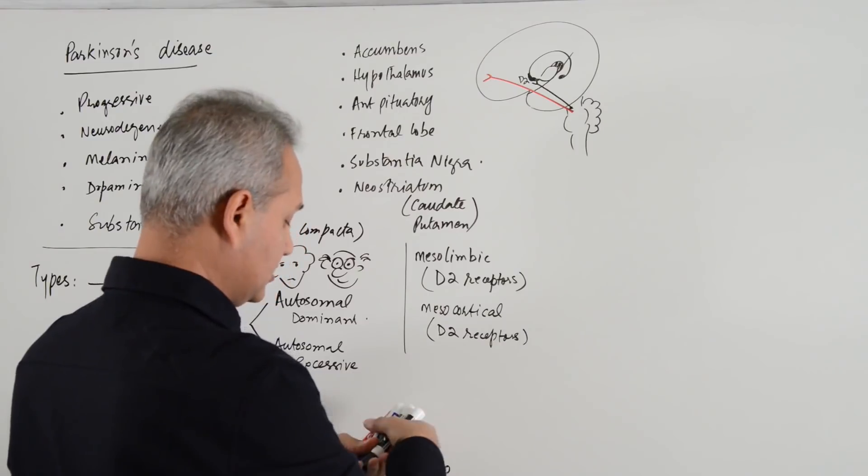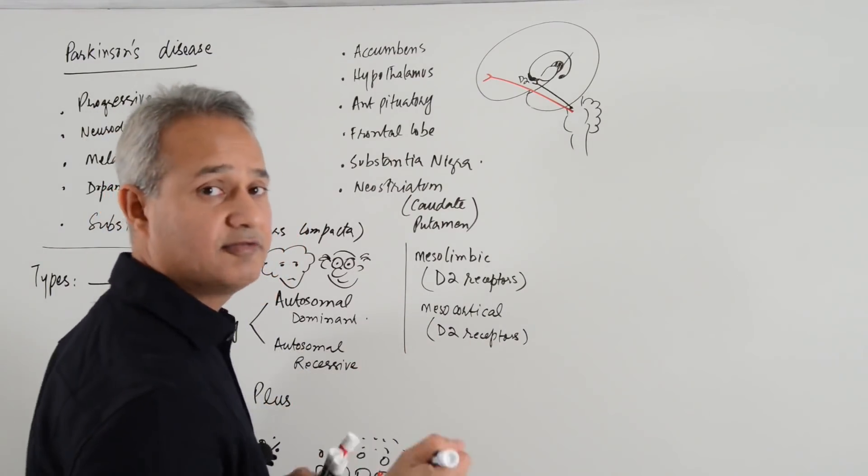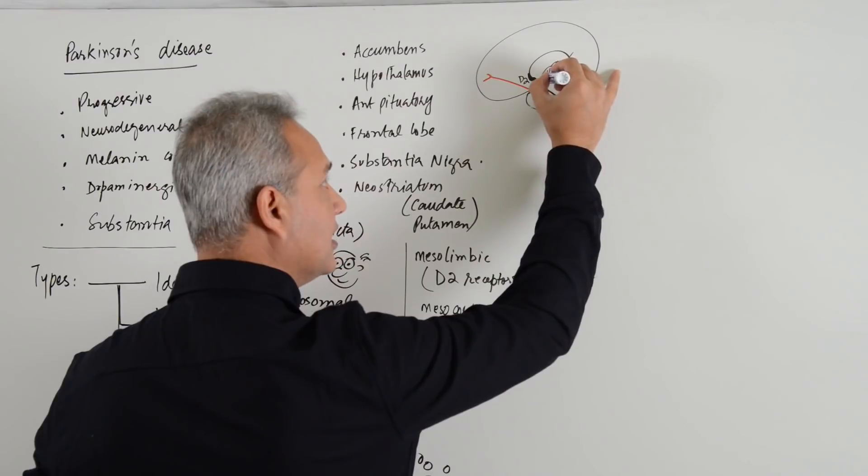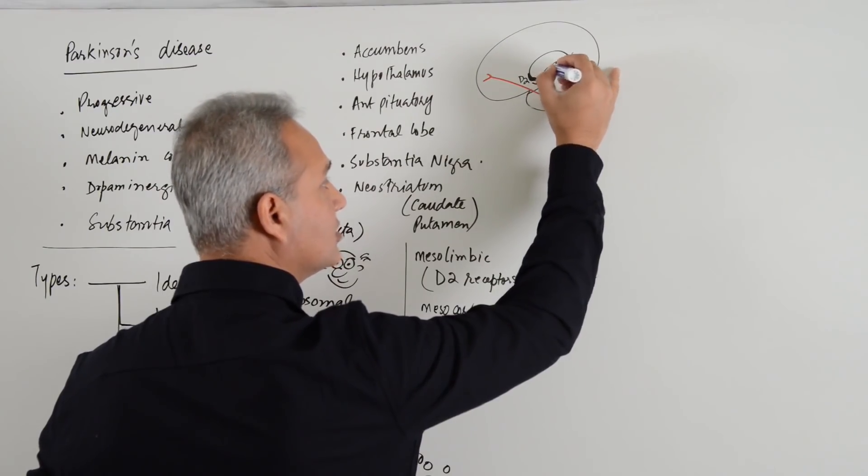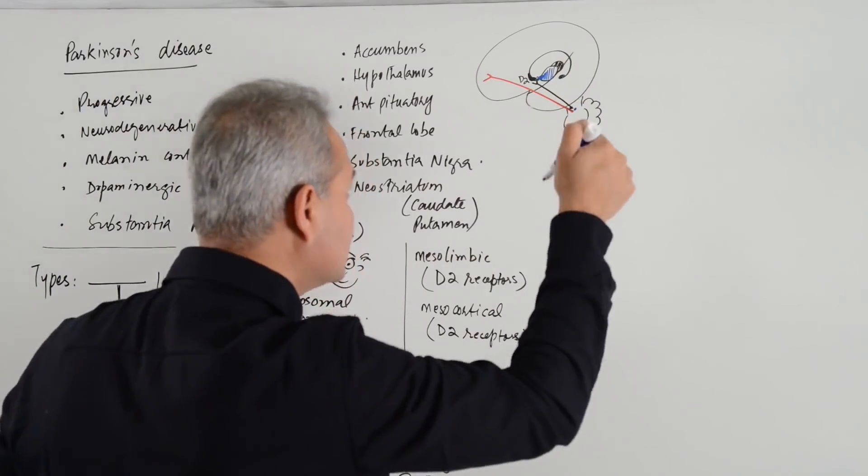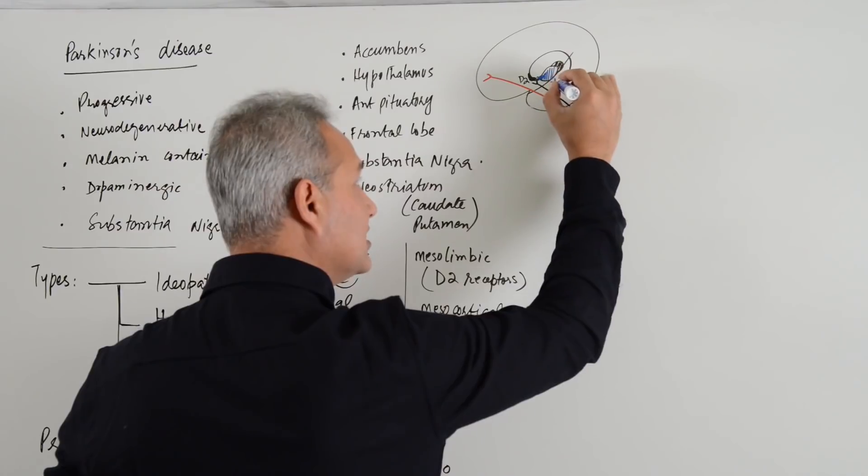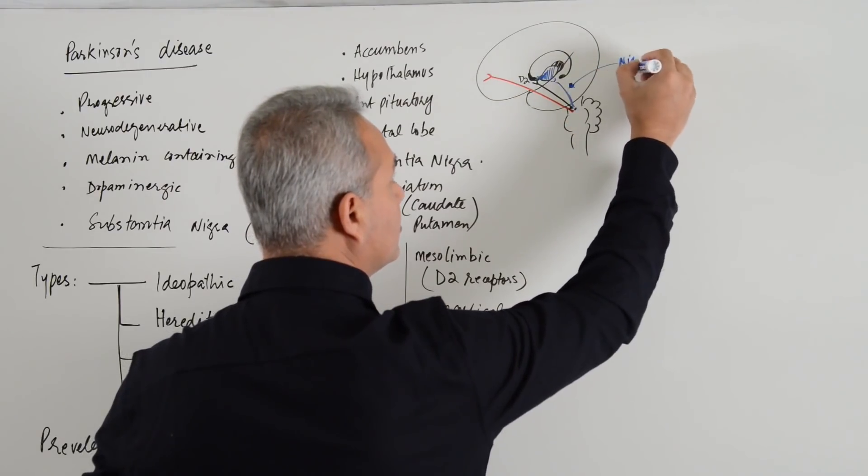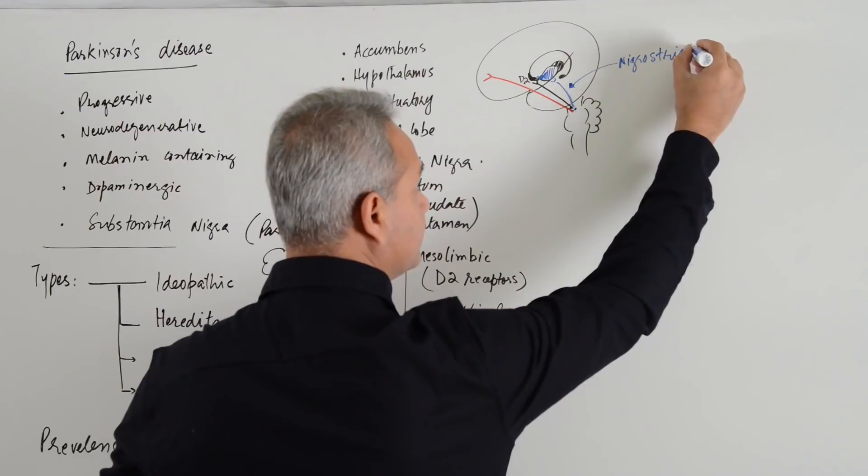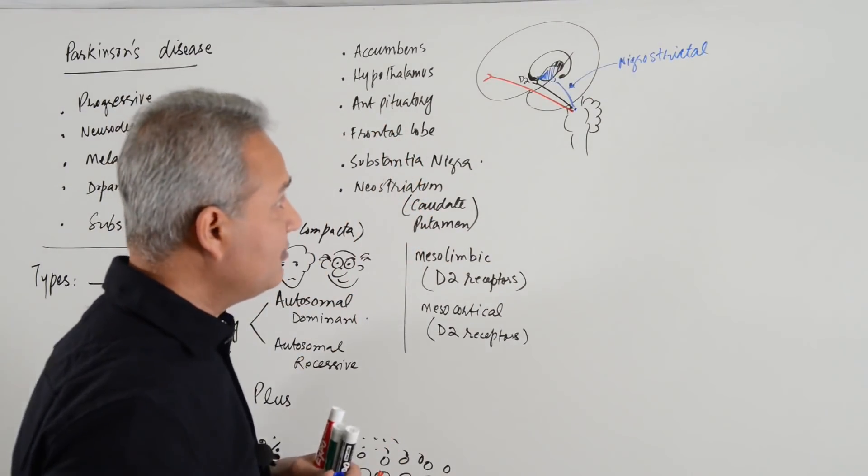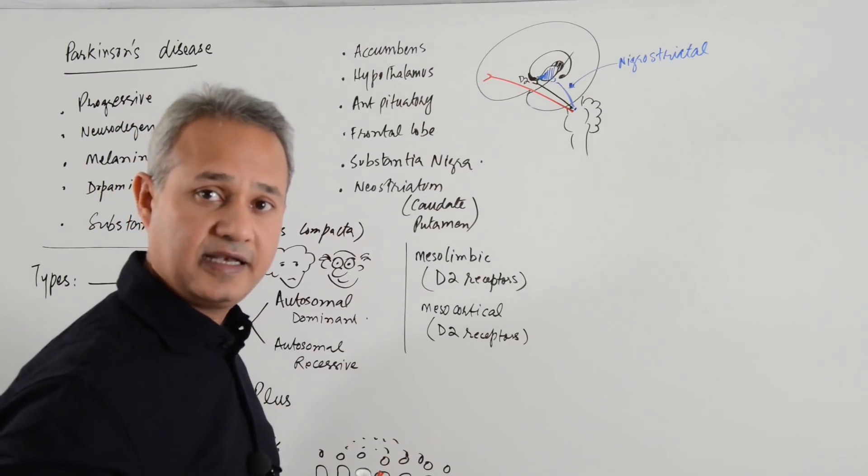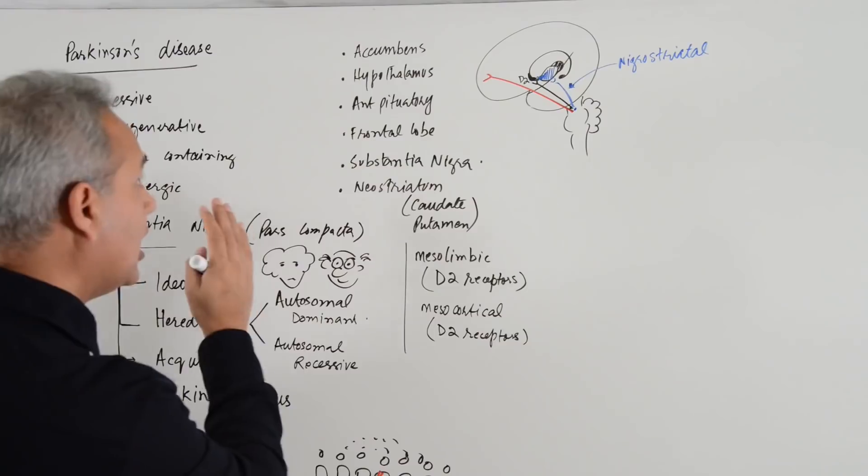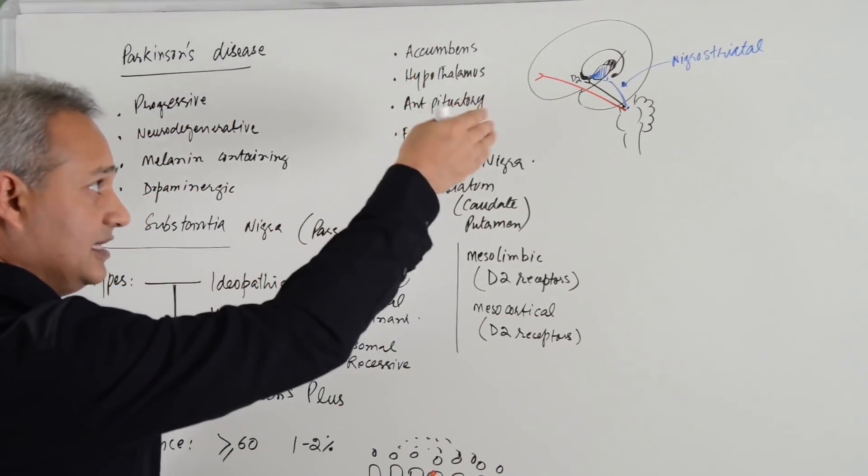Then is the nigrostriatal pathway. I am going to make it in blue and that is something which is really important. So, substantia nigra here in the midbrain and striatum here, this is the nucleus caudate and of course the putamen. Putamen is going to be on the medial side of it and we would see this in more detail. This pathway here, this is the nigrostriatal pathway that is also dopaminergic. We have discussed about that pathway in detail in the basal ganglia's direct and indirect pathway. So, more detail there, but over here today, we will do enough to understand how Parkinson's is caused when there is a problem with that pathway.